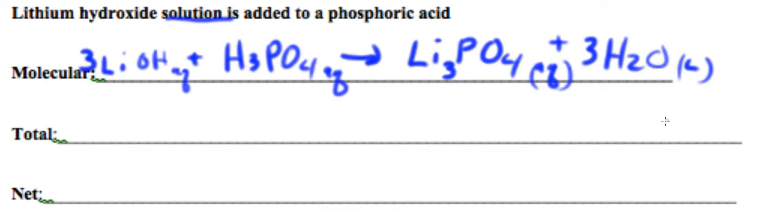Now when we write the total ionic equation, we're going to write everything as ions. So that's going to be three lithium ions, that's plus, and then three hydroxide ions.